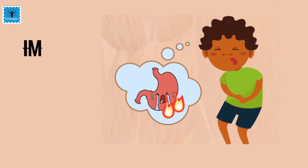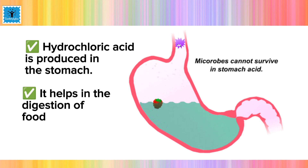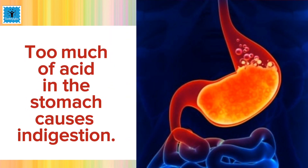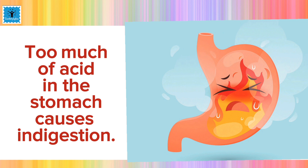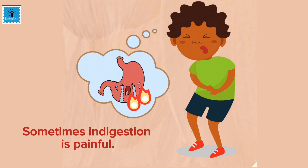Let's take the first example, which is indigestion. We know that hydrochloric acid is produced in our stomach, which helps in the digestion of food. But too much acid in the stomach causes indigestion, which is quite painful. If it is not controlled, it can cause stomach ulcers.